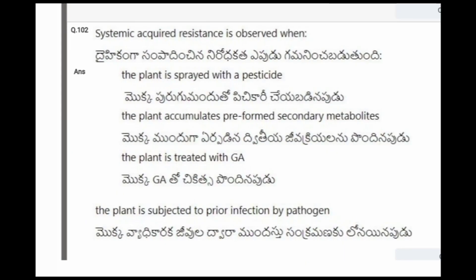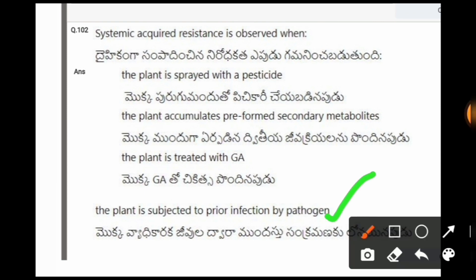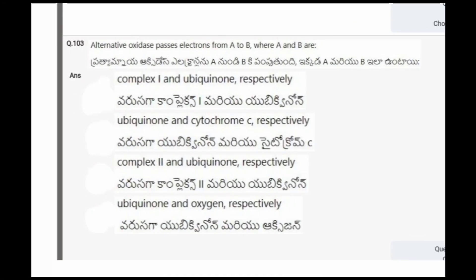Next question: Systemic acquired resistance is observed when? The options are: the plant is sprayed with a pesticide; the plant accumulates preformed secondary metabolites; the plant is treated with gibberellic acid; the plant is subjected to prior infection by pathogen. The correct option is the fourth one, that is the plant is subjected to prior infection by pathogen.